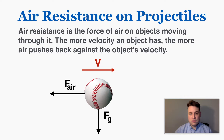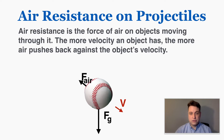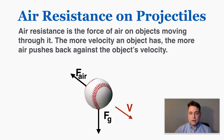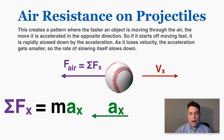Air resistance always works perfectly against the direction of velocity. So if the velocity is pointing in one direction, the air resistance will push back in the opposite direction. This creates a pattern where the faster an object is moving through the air, the more it is accelerated in the opposite direction, because air resistance is pushing it back and there's usually nothing pushing it forwards.